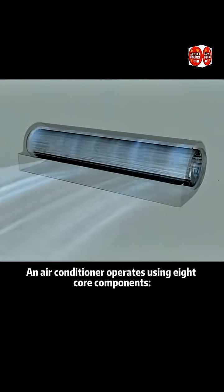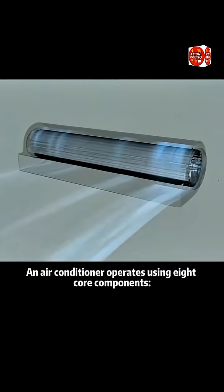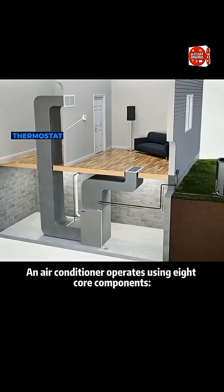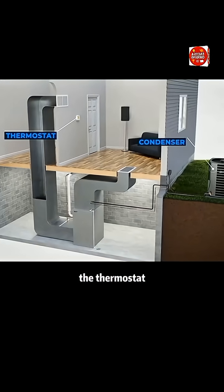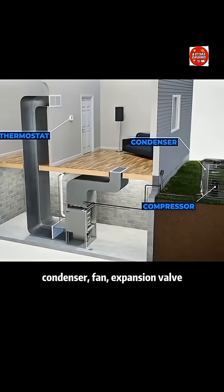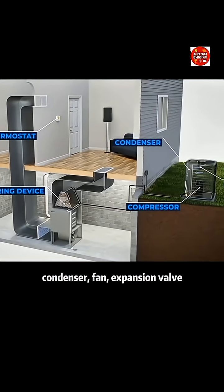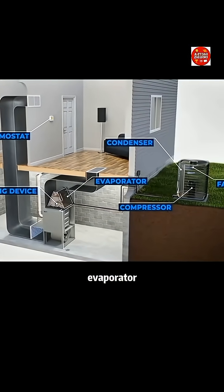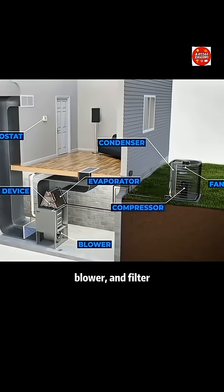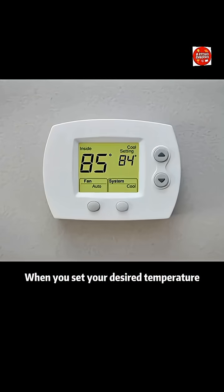An air conditioner operates using eight core components: the thermostat, compressor, condenser, fan, expansion valve, evaporator, blower, and filter.